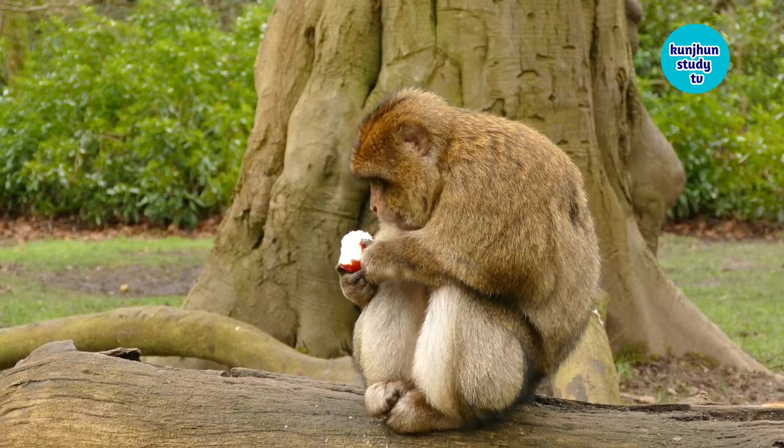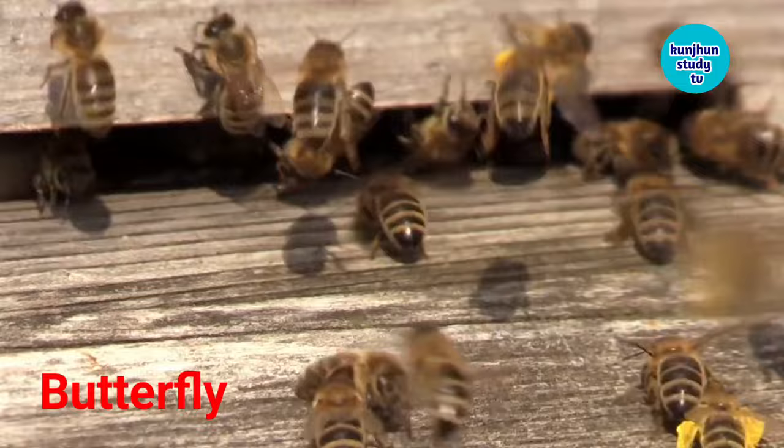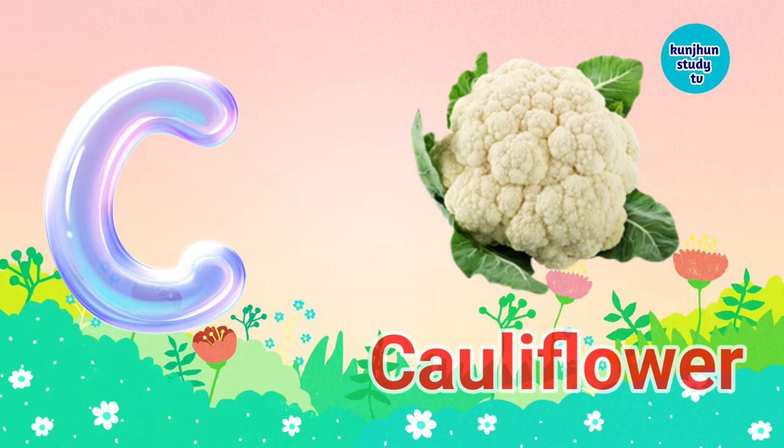B, B for Bee, B means Madhu Maki. C, C for Cauliflower, Cauliflower means Pulgovi.